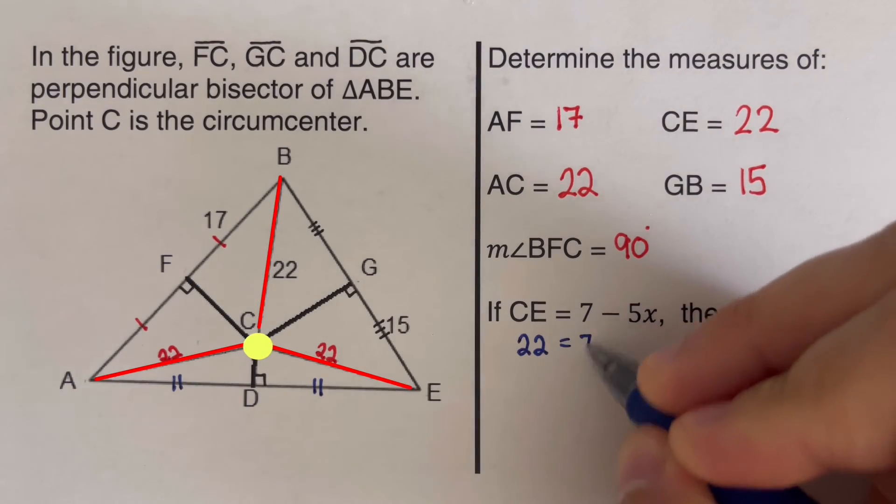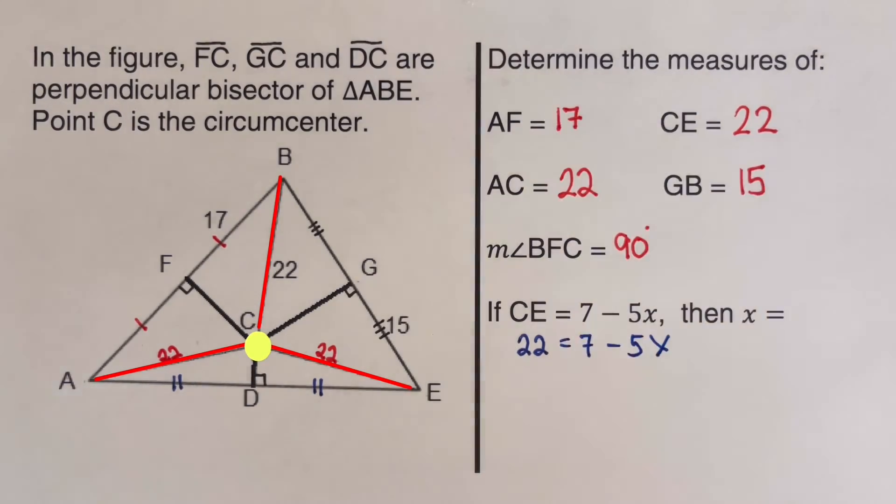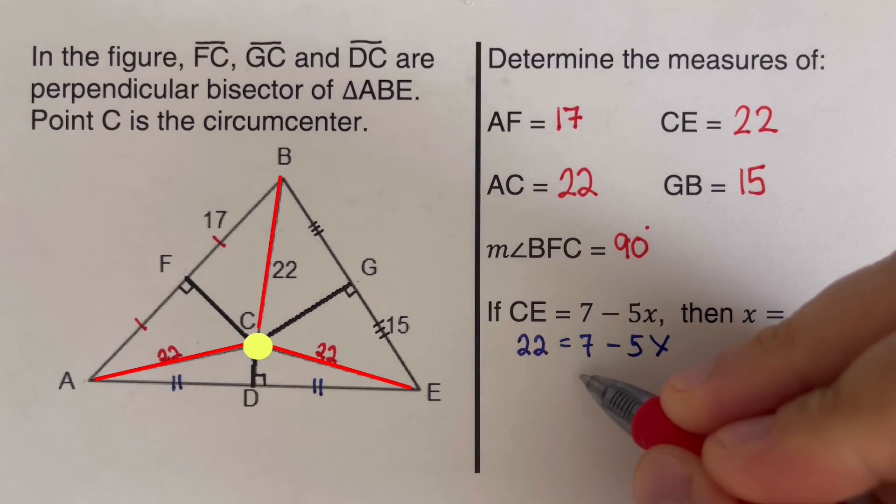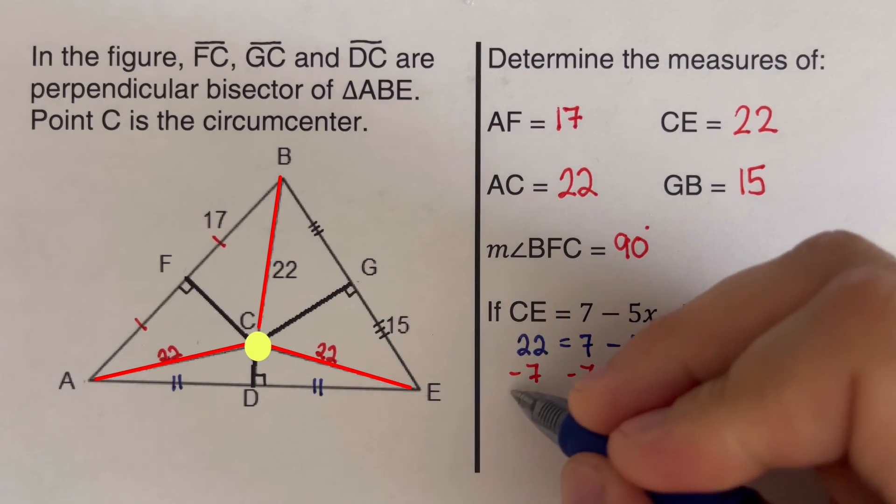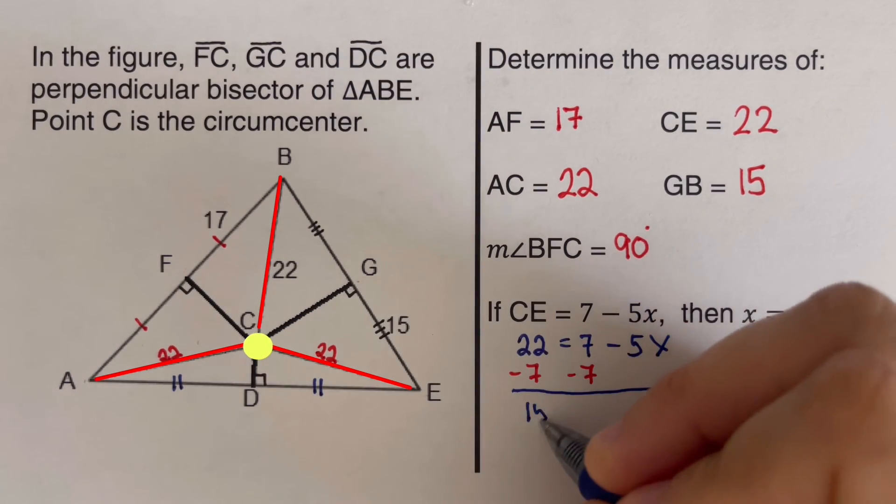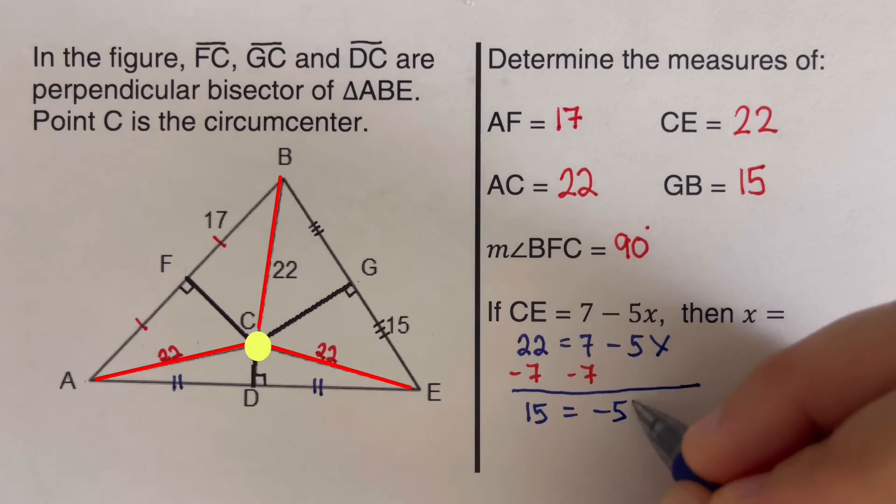So 22 is equal to 7 minus 5X. So we wanted to solve for X. So we're going to subtract 7 from both sides, minus 7 and minus 7. So 22 minus 7 is 15 is equal to negative 5X.